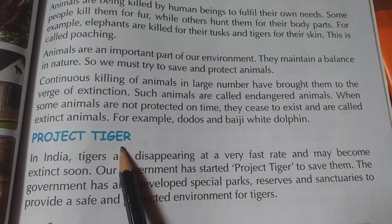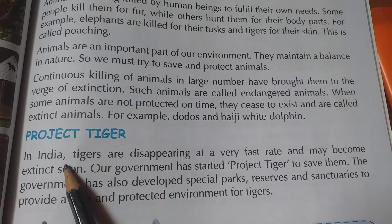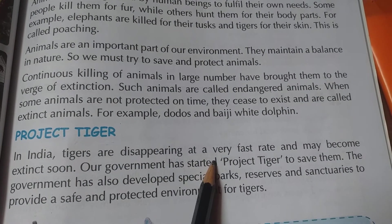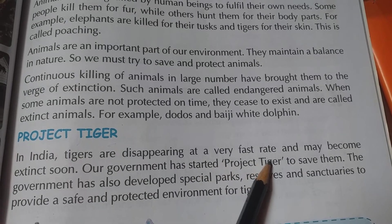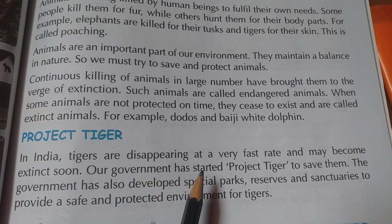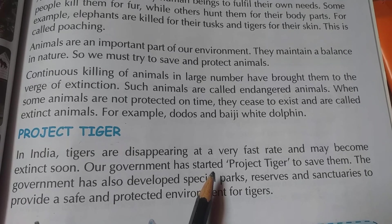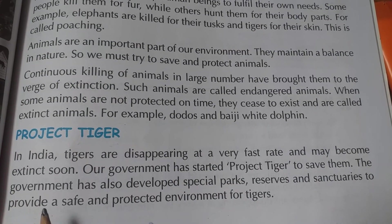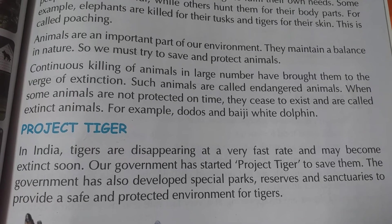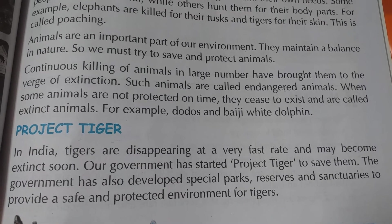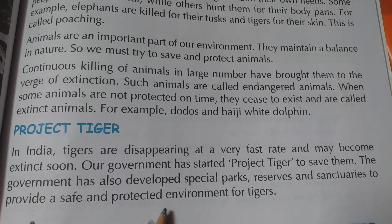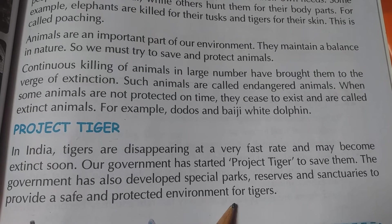So it is compulsory to save animals. The next topic is Project Tiger. In India, tigers are disappearing at a very fast rate and may become extinct soon. Our government has started Project Tiger to save them. The government has also developed special parks, reserves, and sanctuaries to provide a safe and protected environment for tigers.